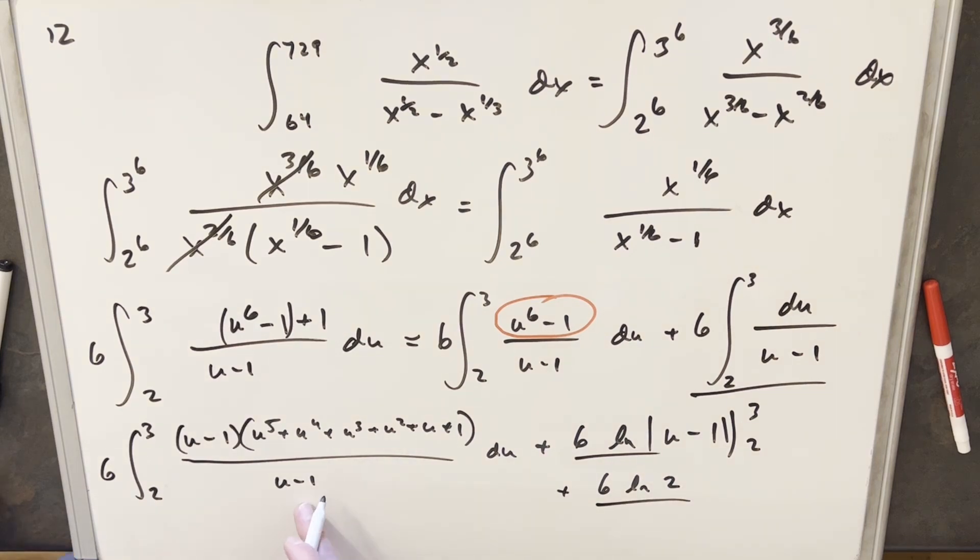Then we can put our focus on this integral. Our u minus 1s cancel. That's nice. This is kind of the tedious part because this is easy, just power rule. But that means we're going to have to evaluate this integral for 6 terms. It's going to be kind of a mess but let's keep going.